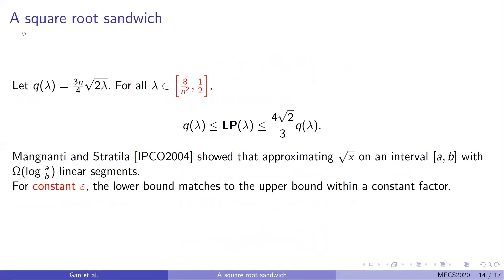The final step is to make a square root sandwich. Let q lambda be this form. For all lambda in this range, we can show that LP is sandwiched by these two functions. Then the final step is to show that if this condition holds, using linear pieces to approximate LP requires at least the same amount of linear pieces as approximating q lambda, which is at least log A over B. Plugging in the A value and B value, we get a log n lower bound. This exactly matches the upper bound within a constant factor.